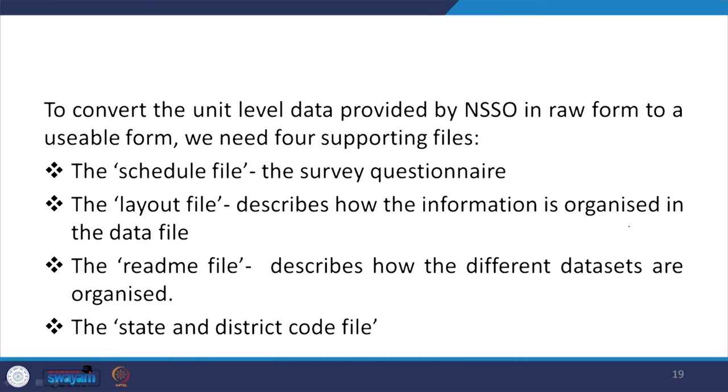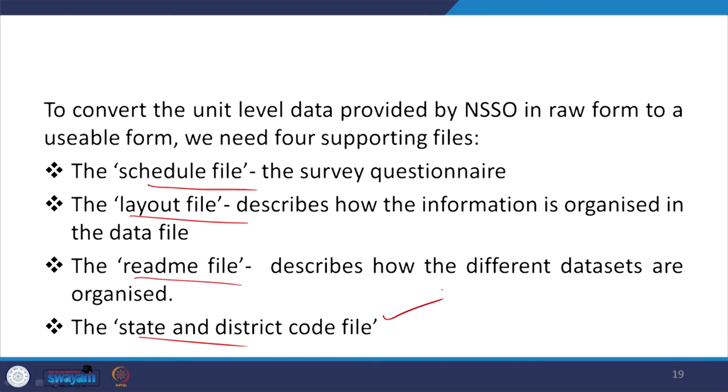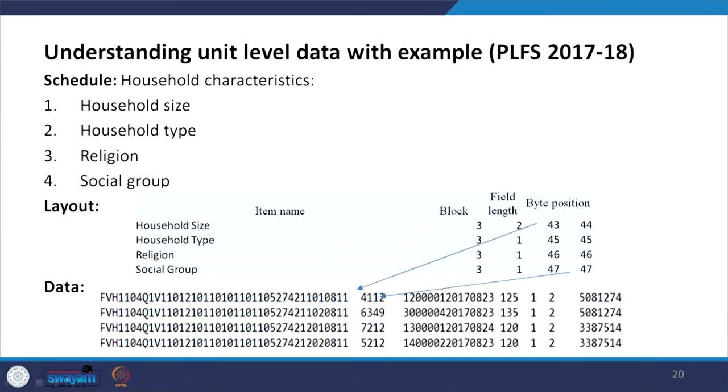To convert the unit level data provided by NSS in raw form to a usable form, we need four important files: the schedule file, layout file, readme file, and state or district code file. The schedule file contains the survey questionnaire. The layout file contains information on how the data is organized. The readme file describes how the different datasets are organized. The state and district code file gives the codes for states and districts — without those codes it is not possible to interpret the data.